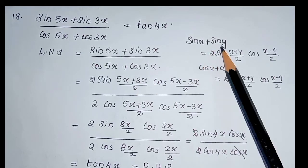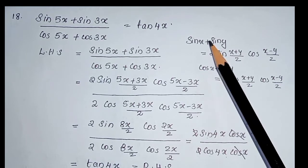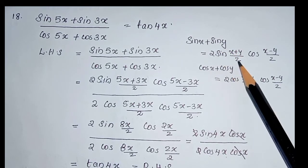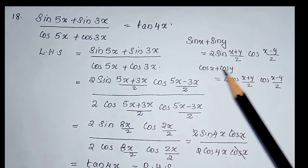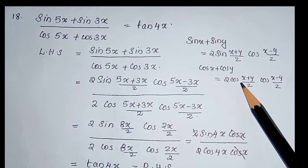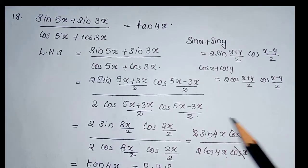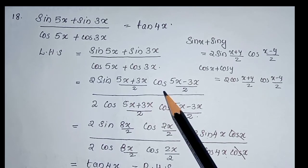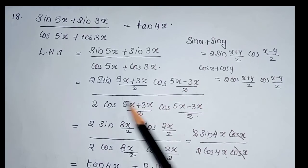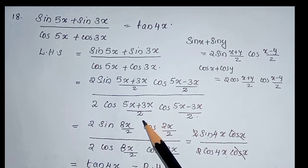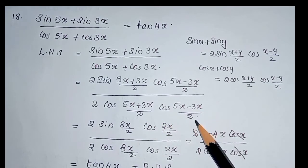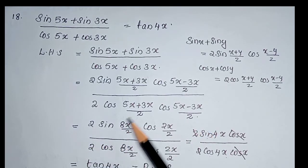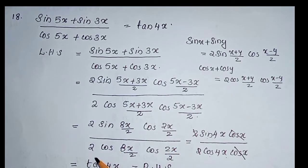We have the identity sin x plus sin y equal to 2 sin((x+y)/2) cos((x-y)/2), and cos x plus cos y equal to 2 cos((x+y)/2) cos((x-y)/2). Using this identity, we can write 2 sin((5x+3x)/2) cos((5x-3x)/2) divided by 2 cos((5x+3x)/2) cos((5x-3x)/2). That is equal to 2 sin 4x cos x divided by 2 cos 4x cos x.